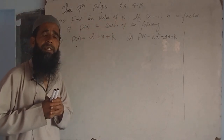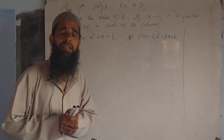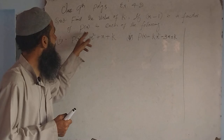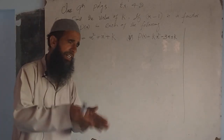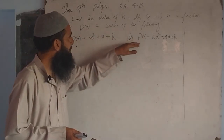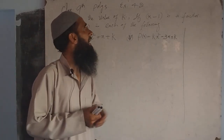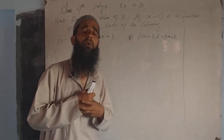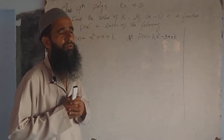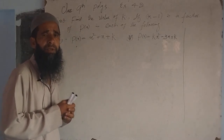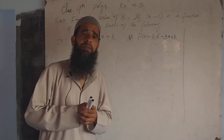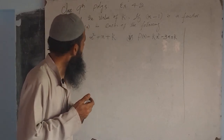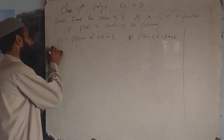Here we find the value if x-1 is a factor of the given polynomial p(x) for each of the following cases. Question number 3 has 4 parts. We will discuss the first part and fourth part; second and third parts are a home assignment. If there is any problem, write it in the comment box.